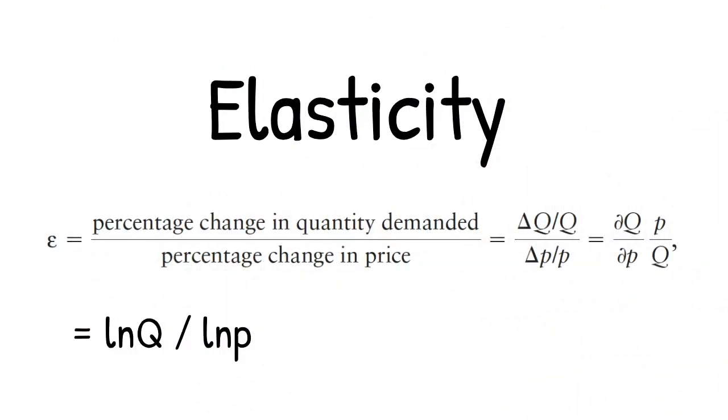An elasticity is the percentage change in a variable in response to a given percentage change in another variable, holding all other relevant factors constant. The price elasticity of demand, epsilon, is the percentage change in the quantity demanded in response to a given percentage change in price. According to the law of demand, it is always negative.